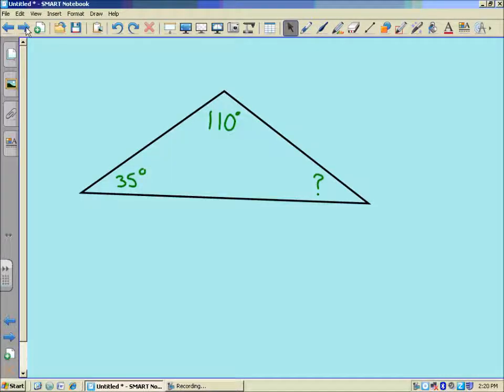Pretty convenient knowing that about triangles. Now, again, the measures of the three angles of this triangle have to add up to 180. So I'm keeping that in mind. And I take the two angles that I know, which are 110 and 35 degrees.